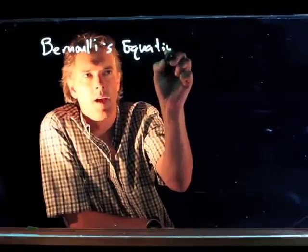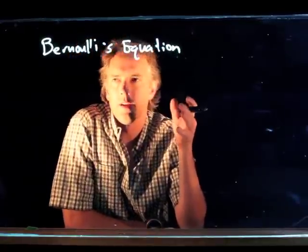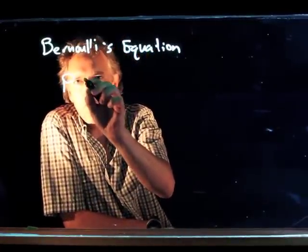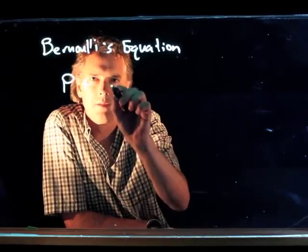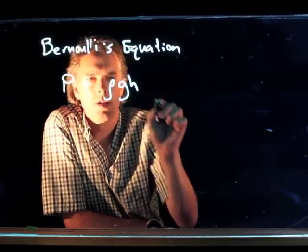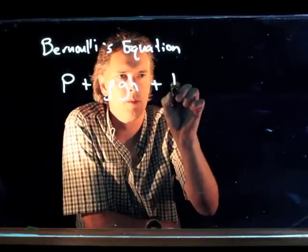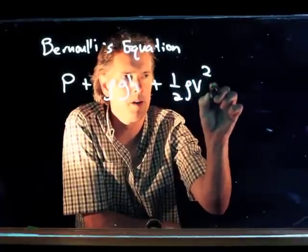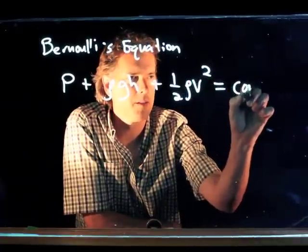Bernoulli's equation is the following: pressure P plus rho gh plus one-half rho v squared equals a constant.